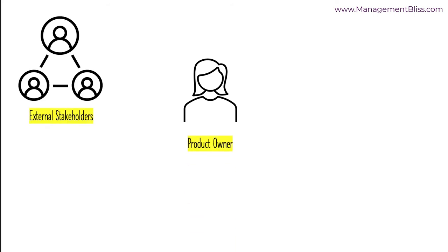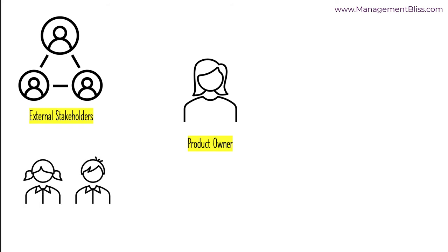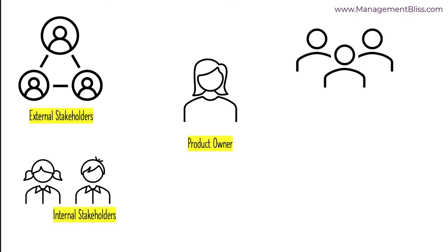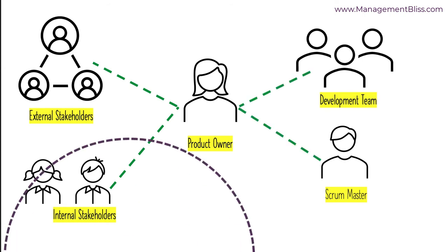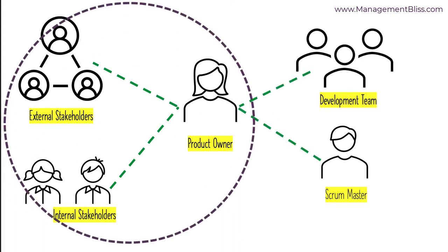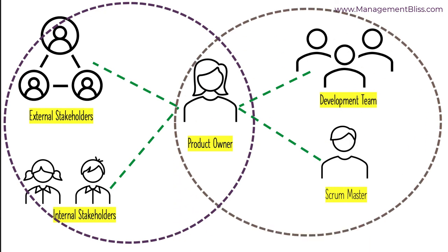The Product Owner needs to look into two aspects of the product simultaneously. One aspect is understanding the priorities and needs of the customers, users, and organization leads, and working to ensure that the right product is developed. Another aspect is communicating and working with the Development Team regarding what needs to be developed and in what order. A Product Owner maintains a good balance between internal stakeholders, external stakeholders, and the working team.